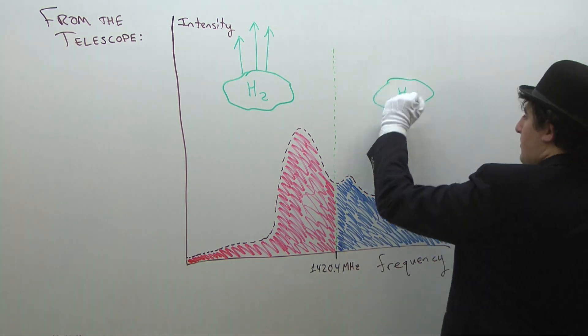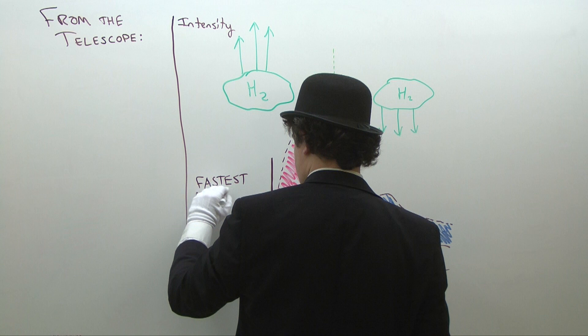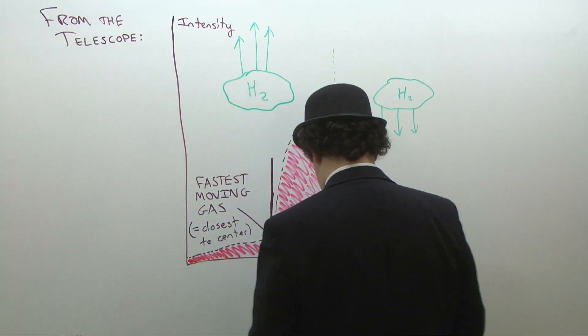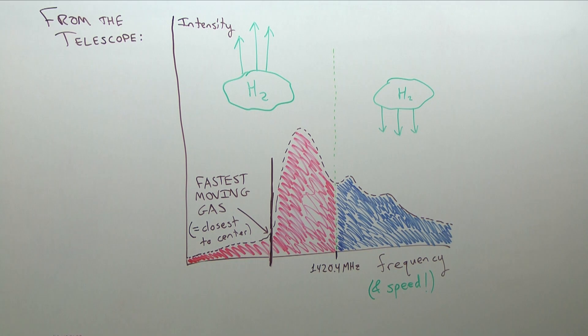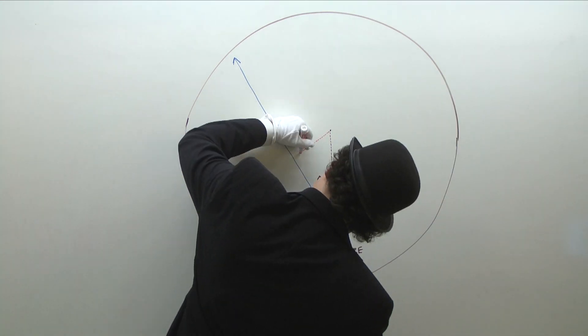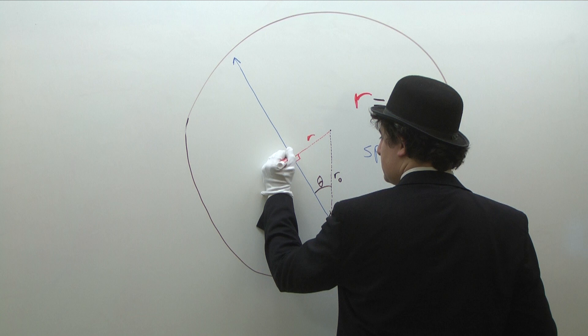Going back to our telescope's data, we already know that the frequencies of the radio waves tell us how fast gas clouds are moving. We can work out that the fastest gas cloud we observe is the one which is the closest to the center of the galaxy, because its orbital velocity carries it along our line of sight, so we see the most exaggerated speed. With a bit of trigonometry, we can then find how far that point is from the center of our galaxy.